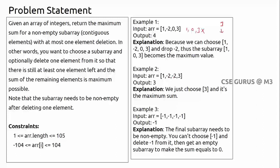In example two with `[1, -2, -2, 3]`, the output is 3. You just choose the single element `3` without any deletion. Taking `[1, -2, -2]` or similar subarrays gives less. For an array of all `-1`s, if you delete one element, you still can't get more than `-1`, so that's the answer.